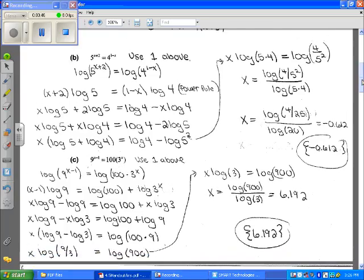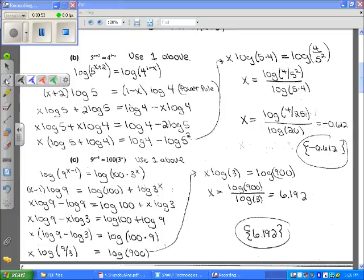So the first thing we're going to do is take the log of each side. We can use base 10 or base e either way. I decided to use base 10, which is called common log. So I took the log of each side.